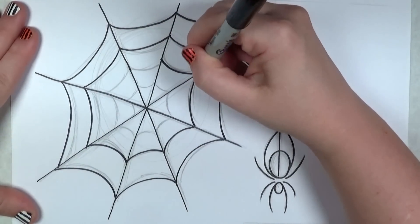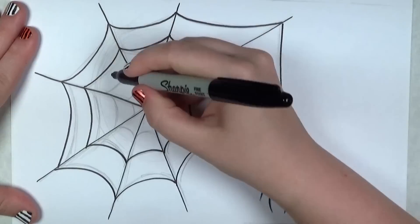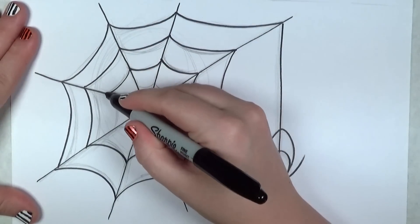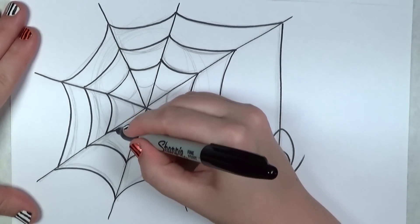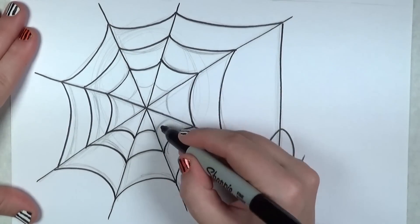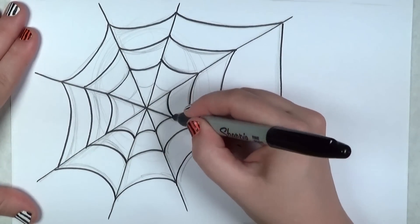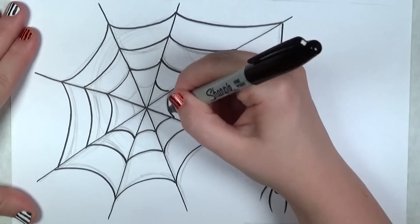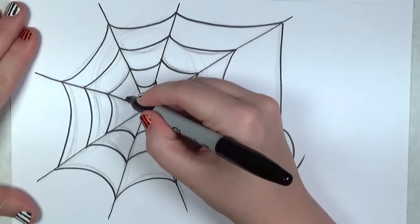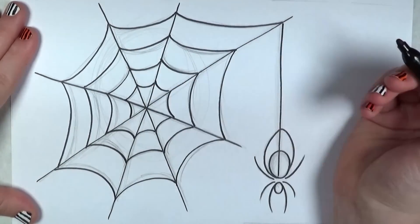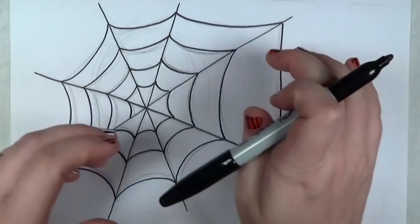And again, you can see that the web is not perfectly round—it's kind of elongated, elliptical looking—and I think that just makes it look kind of cool. There we go.